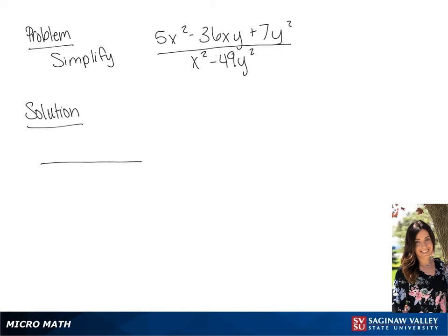We are going to simplify this. First, we're going to factor the numerator. This is going to factor to (5x minus y) times (x minus 7y).